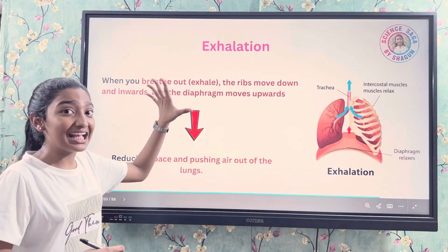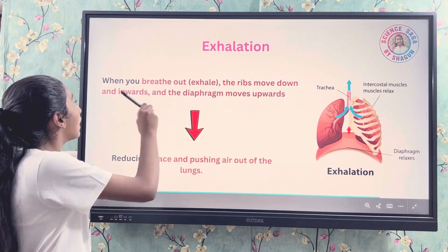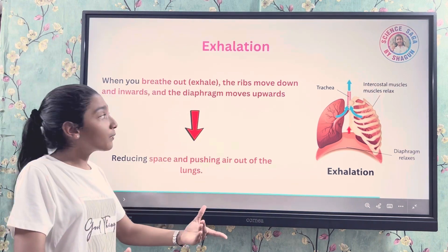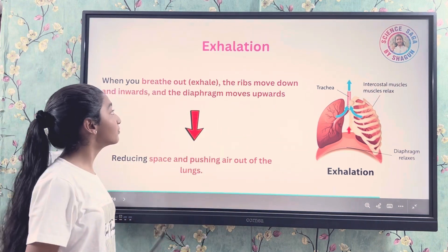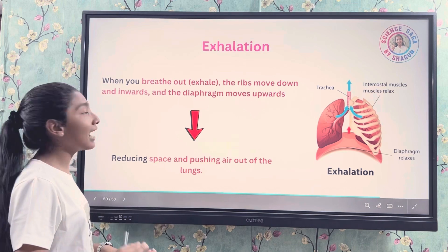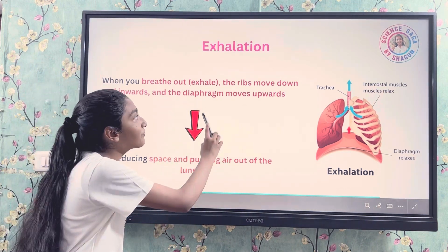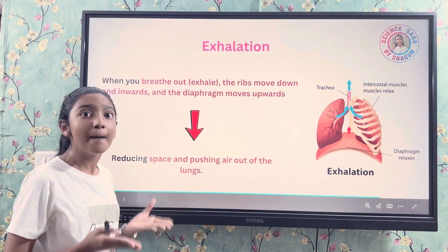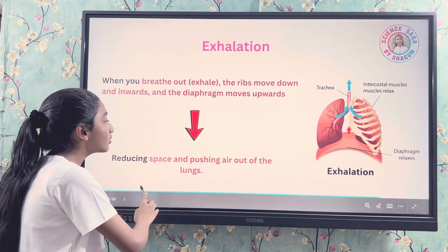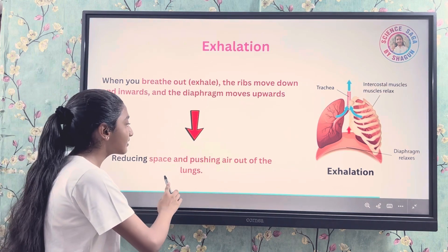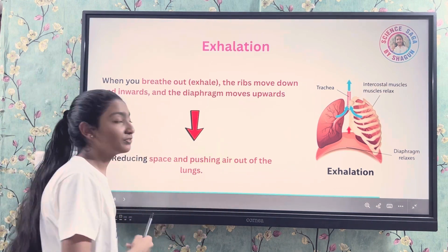During exhalation, when you breathe out, the ribs move down and inwards and the diaphragm moves upwards. It relaxes, reducing the space and pushing air out of the lungs.